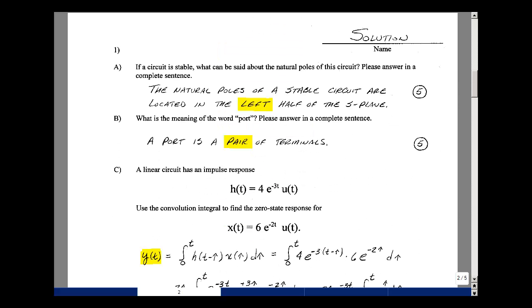In problem 1a, there was a question: if a circuit is stable, what can be said about the natural poles of this circuit? Well, the natural poles of a stable circuit are located in the left half of the s-plane.